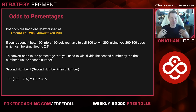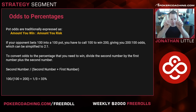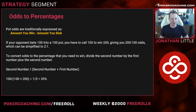To convert 2 to 1 odds to a percentage, you divide the second number by the first number plus the second number — so 1 divided by (2 plus 1), which is 1 divided by 3, or 33%. A lot of people look at 2 to 1 and think you need to win 50%, but no — it's the second number divided by the sum, because you're putting in 1 to win a total of 3. So if you're going to win more than a third of the time, you should stay in the pot.